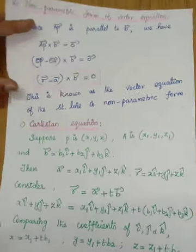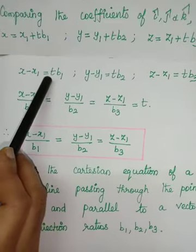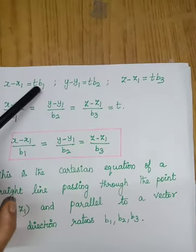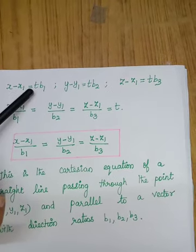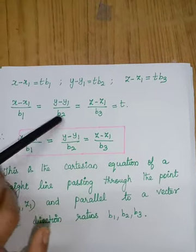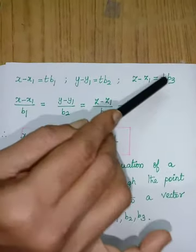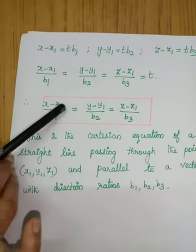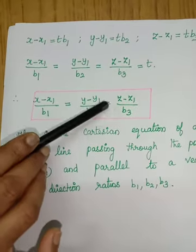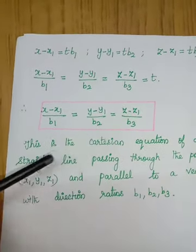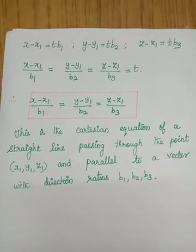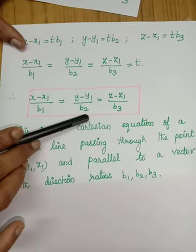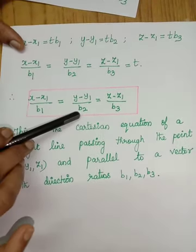Rearranging: x − x₁ = tb₁, y − y₁ = tb₂, z − z₁ = tb₃. Dividing each by the respective b-coefficient gives t in all three cases, so we obtain the Cartesian equation: (x − x₁)/b₁ = (y − y₁)/b₂ = (z − z₁)/b₃. This is the Cartesian equation of the straight line passing through point (x₁, y₁, z₁) and parallel to the vector with direction ratios b₁, b₂, b₃.